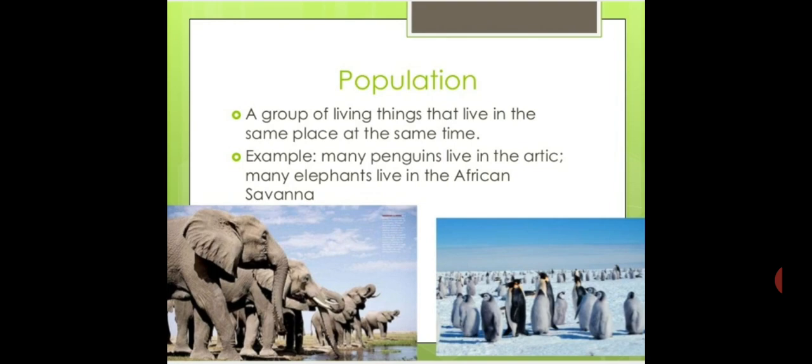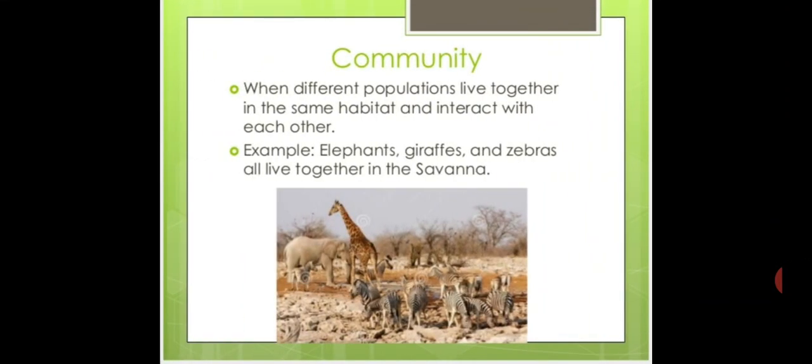We also need to understand the term population. Population is a group of living things that live in the same place at the same time. For example, many penguins live in the Arctic and many elephants live in the African savannah — these groups are called populations because they are the same animals living at the same place.